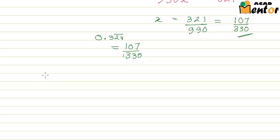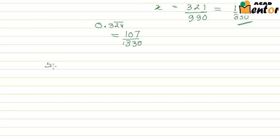Now you can practice other questions as well. You can practice for 5.37 bar, for 6.67 bar (the bar is on 6 and 7), and 0.2 bar. I will give you these answers to check. The first one would be equal to 242 by 45, 6.67 bar would be 73 by 11, and 0.2 bar would be 2 by 9.